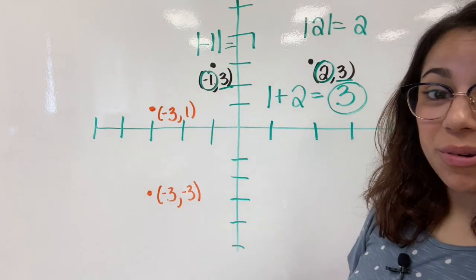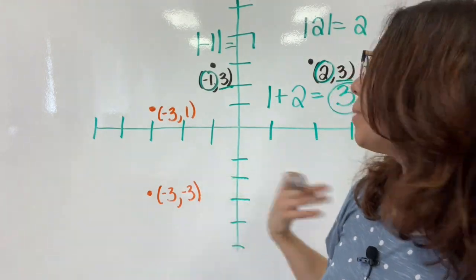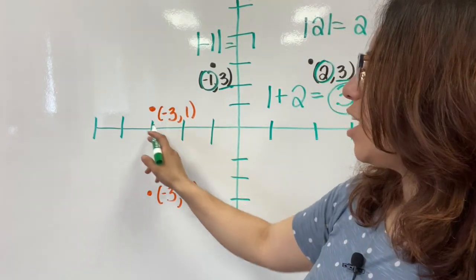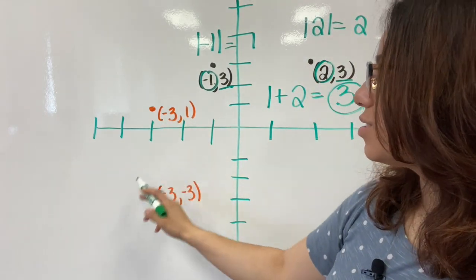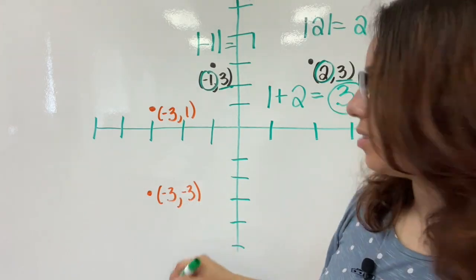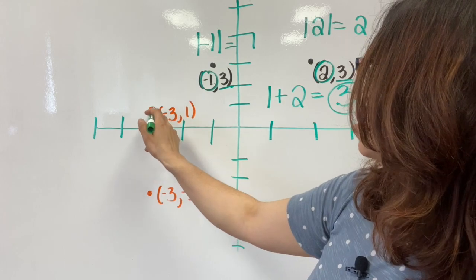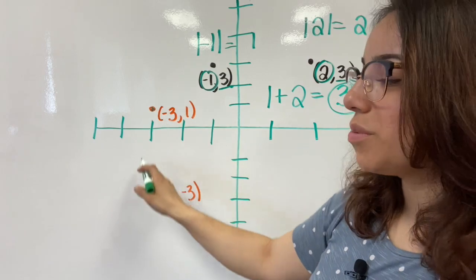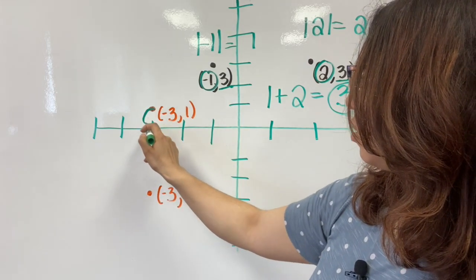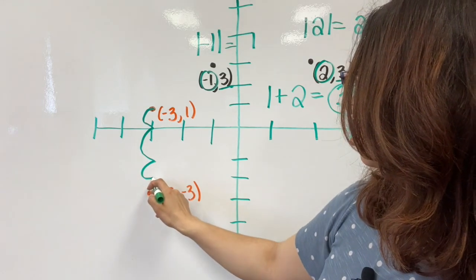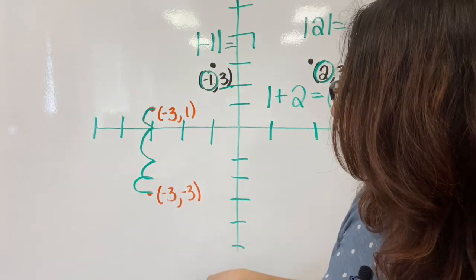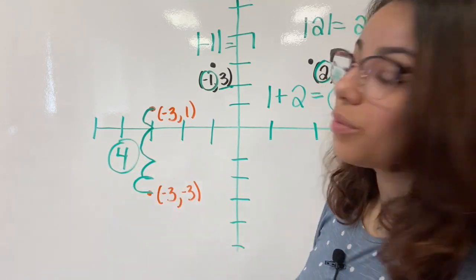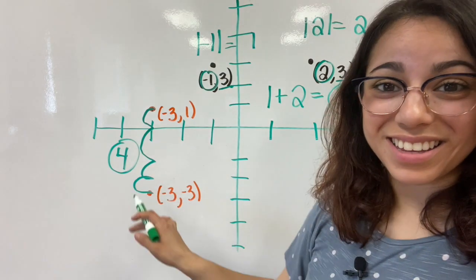Now the other way to do it — which honestly is my favorite method, la otra manera que lo pueden usar, que honestamente es mi método favorito — would be to count the spaces. Que sería contar los espacios para llegar al otro punto. We're going to start here and just count until we get down. Vamos a comenzar en un punto y vamos a contar hasta que llegamos al otro. One, two, three, four. Uno, dos, tres, cuatro. So right there, the distance is four. Allí la distancia es cuatro.